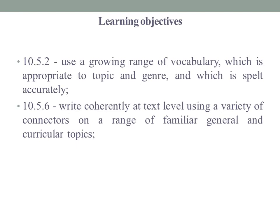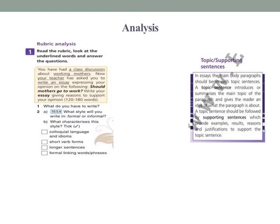Learning objective ten five six: write coherently as a text level using a variety of connectors on a range of familiar general and curricular topics. Rubric analysis — I think you know how to write an opinion essay. In an essay, the main body paragraphs should begin with topic sentences. A topic sentence introduces or summarizes the main topic of the paragraph.